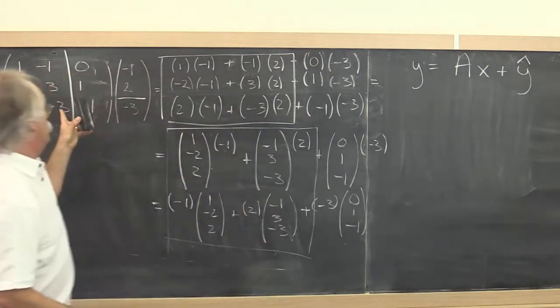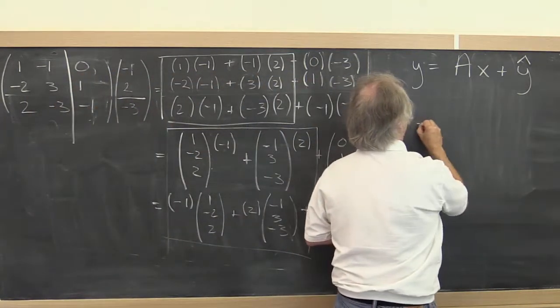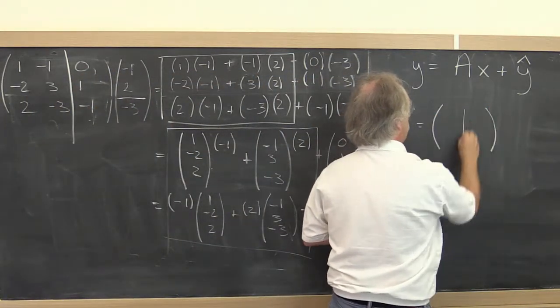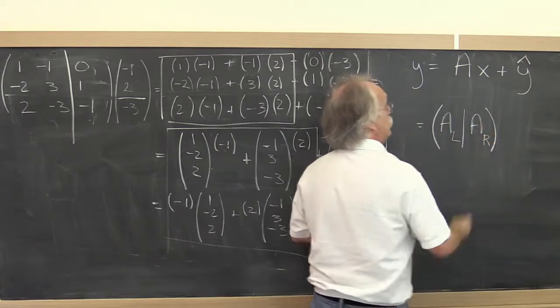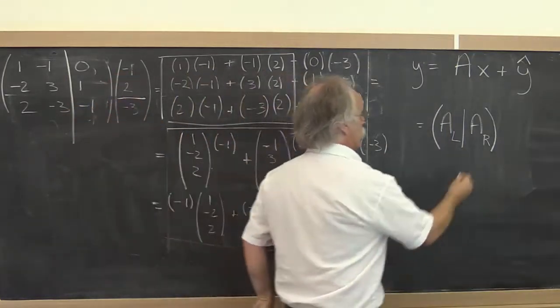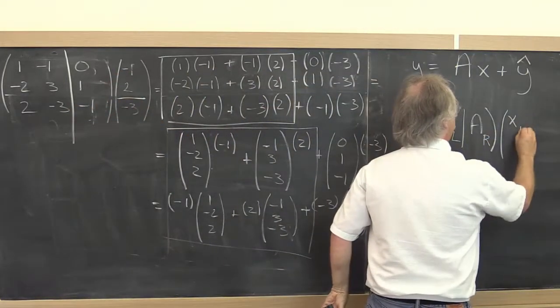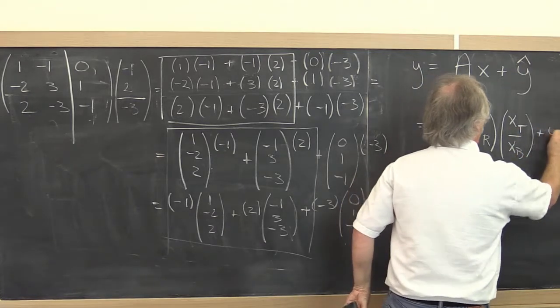What this here suggests is that we should partition A into a left part and a right part. We should partition x into a top part and a bottom part. And we should leave y alone.